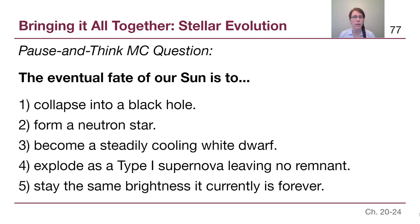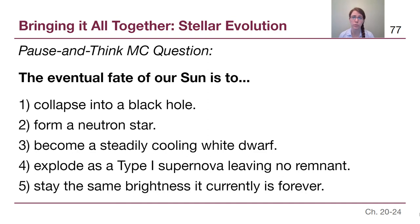A couple of questions to help make sure things are solidifying in our heads properly. What is the best fit for the eventual fate of our own sun? The sun is not in a binary system and it is a low mass star, so the only option that fits is that the sun will become a steadily cooling white dwarf. Eventually it will cool down so much that it doesn't even glow — called a black dwarf — but it won't explode as a type 1 supernova because it has no binary companion to give it extra mass.